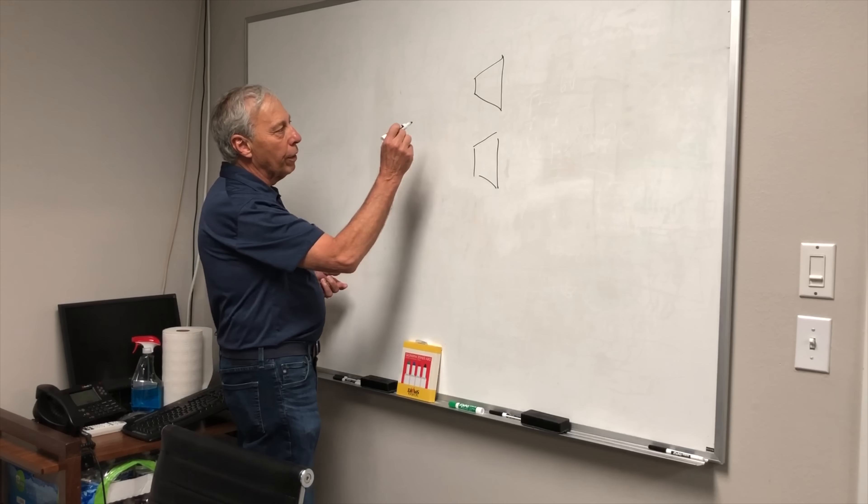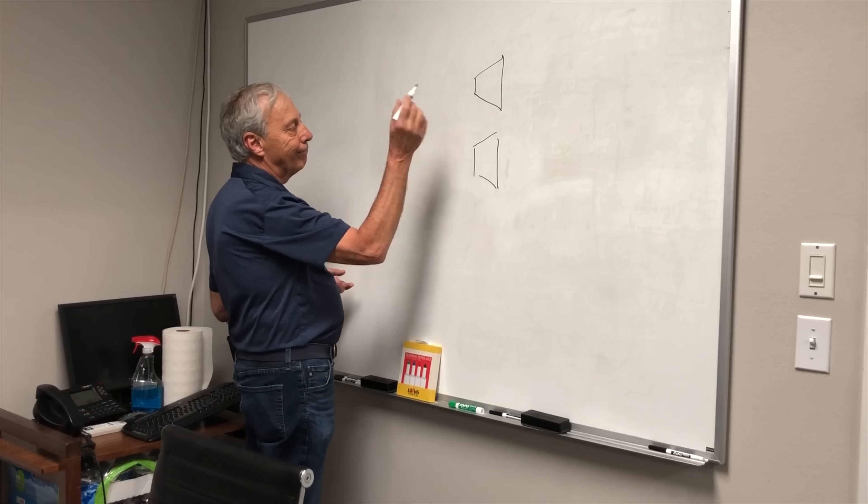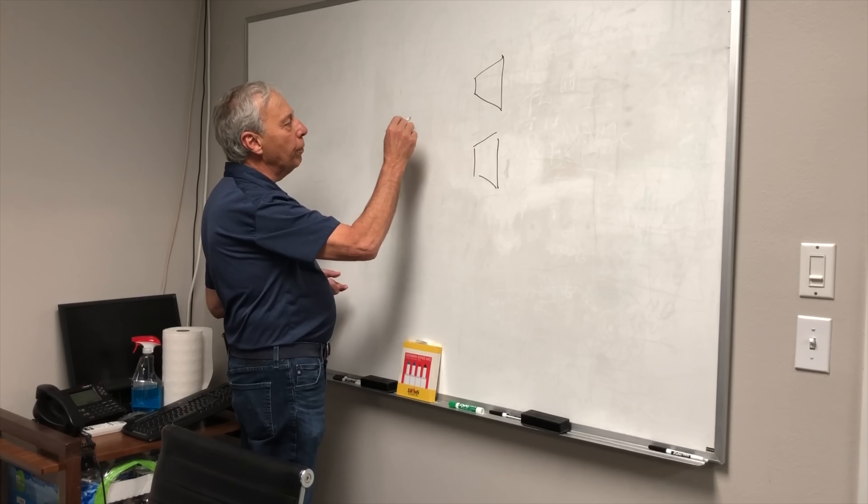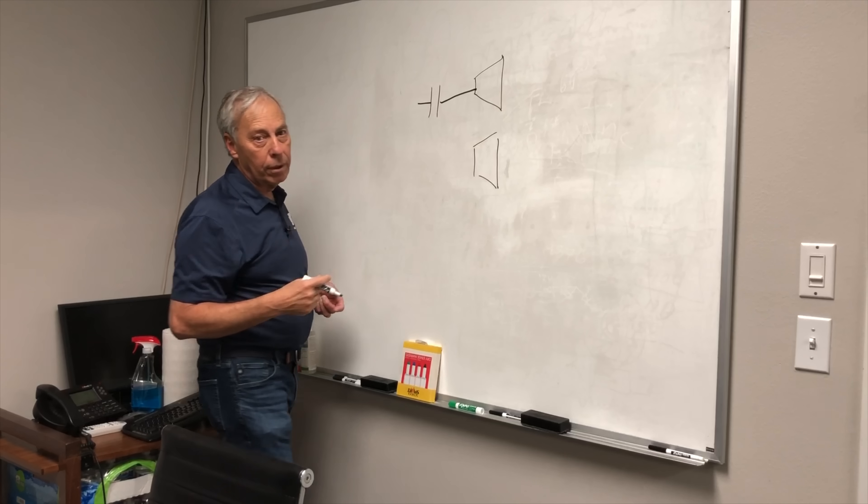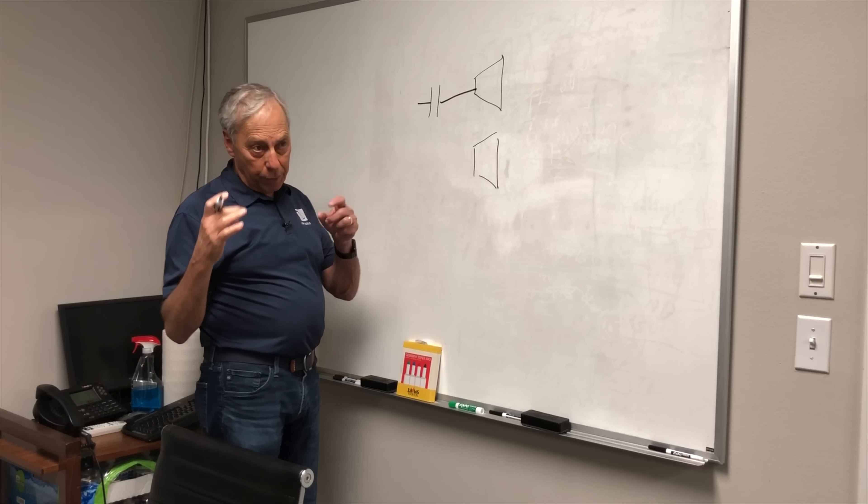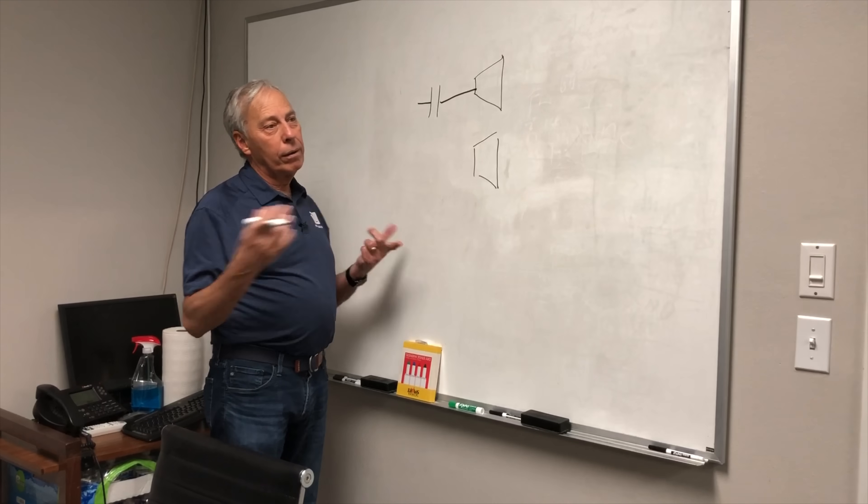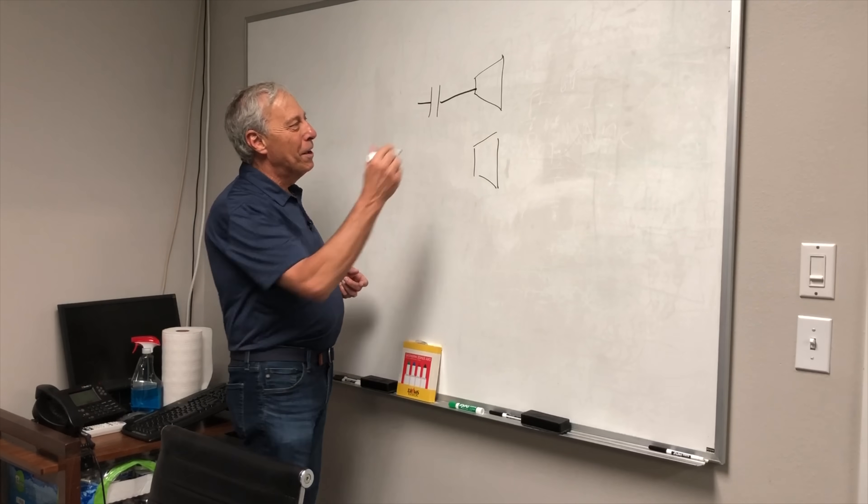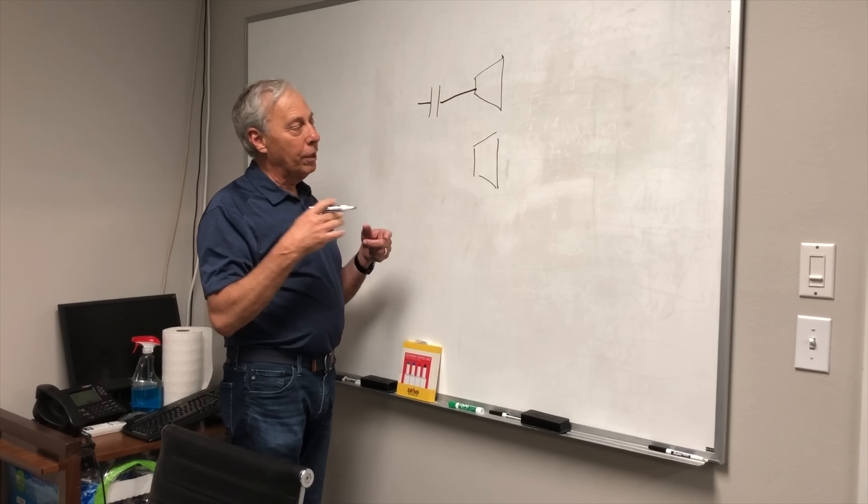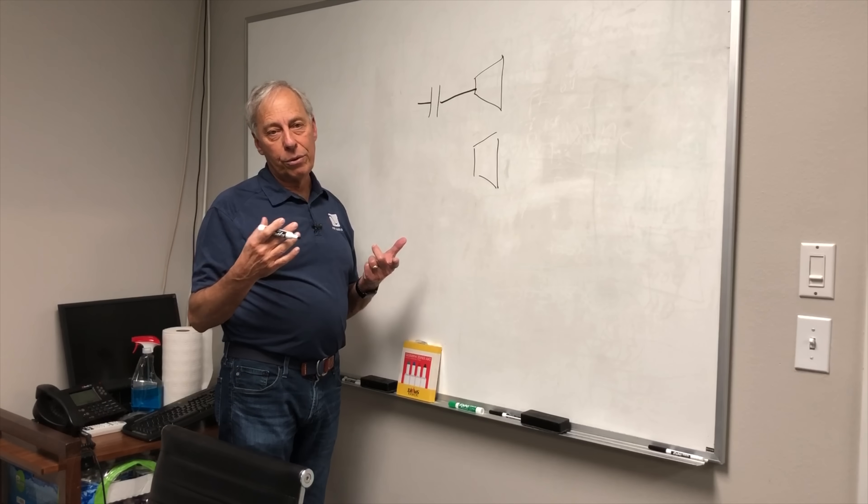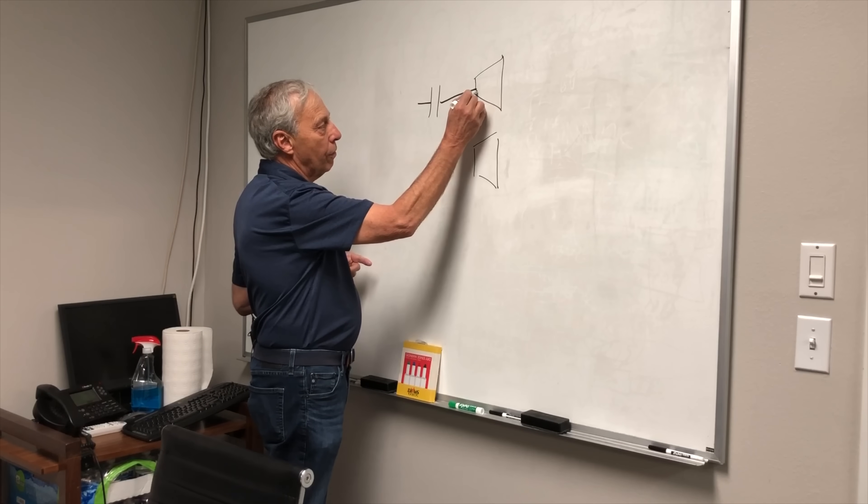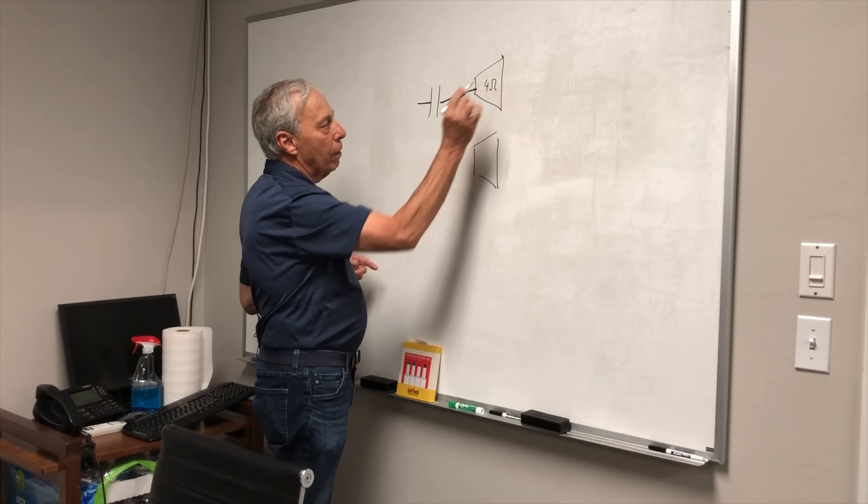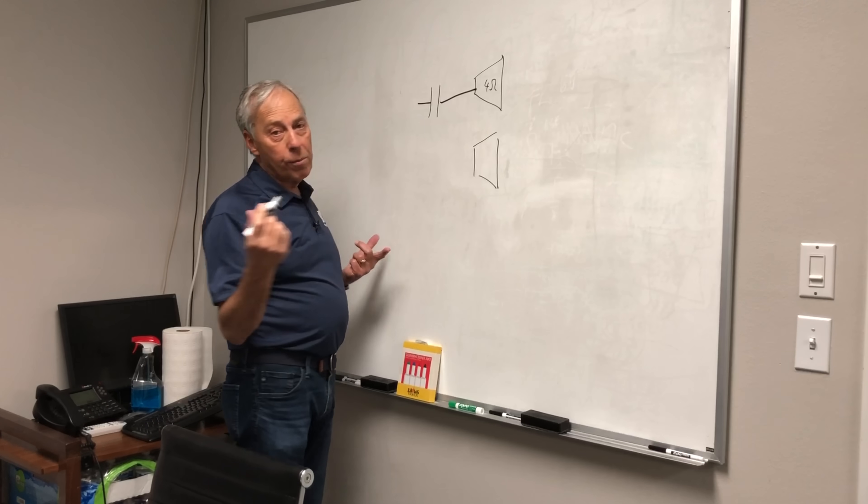And now we're going to draw a crossover. So the simplest crossover for a tweeter is just a capacitor. Because as we remember, I hope, that this tweeter is essentially, it looks like a resistor to the capacitor. And so if this is a four-ohm tweeter, it looks like a four-ohm resistor, right?